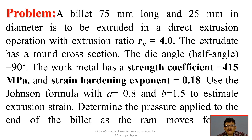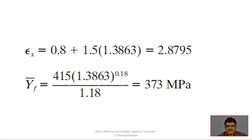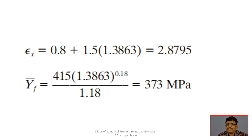Reviewing the initial problem: the billet is 75mm long, the die angle is 90 degrees, the strength coefficient is 415 MPa, and the strain hardening exponent is 0.18. Using Johnson's formula, ε_x = 2.8795, and the average flow stress Ȳ_F = 415 × (2.8795)^0.18 / 1.18 = 373 MPa.